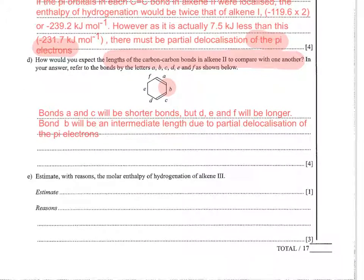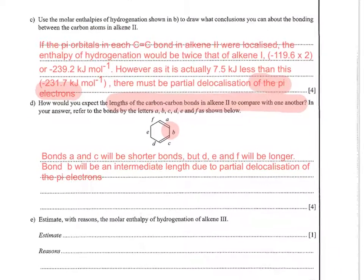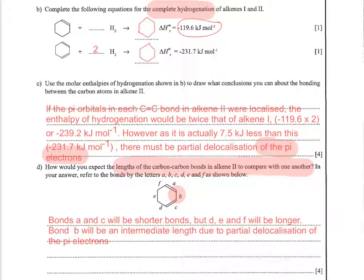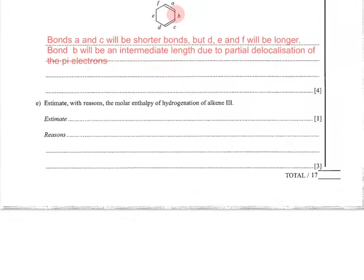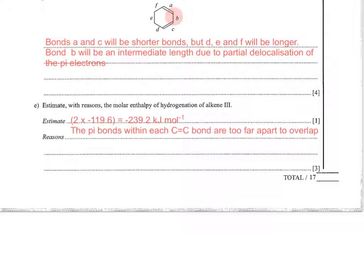We know the molar enthalpy for one carbon-carbon double bond is minus 119.6. This time you should get minus 239.2 because the pi bonds within each carbon-carbon double bond are too far apart to overlap. Admittedly this was quite an applied question, but it's good to make you think about it because it really opens up your understanding of delocalisation.